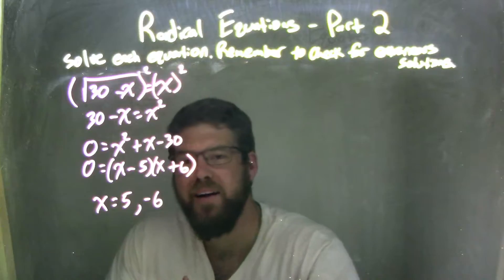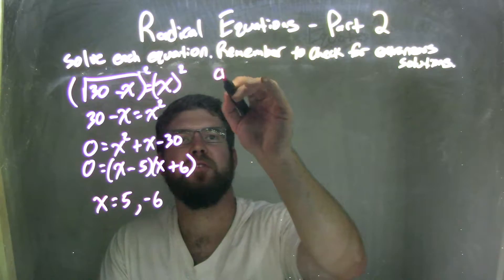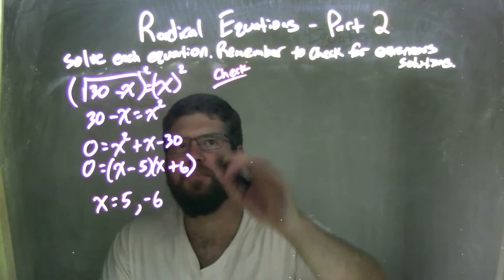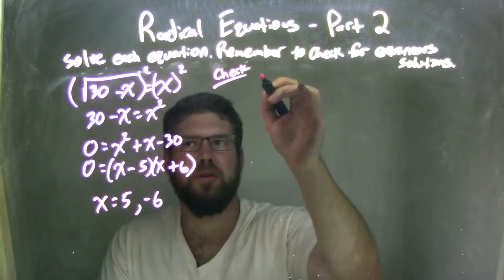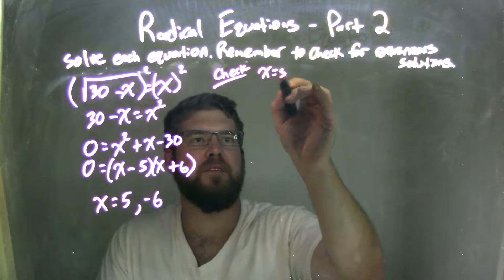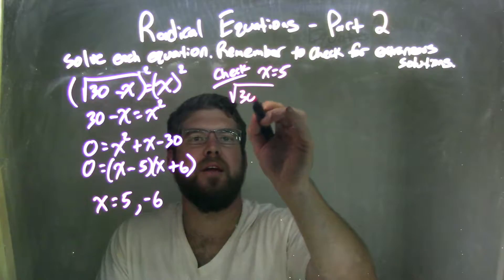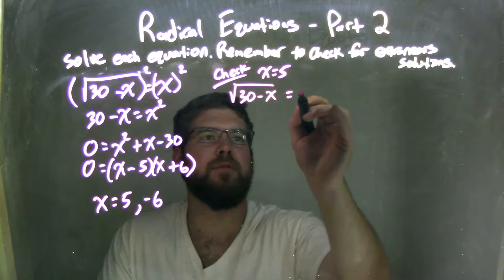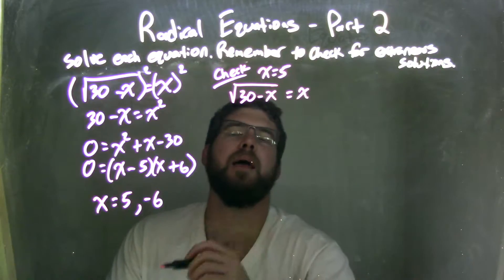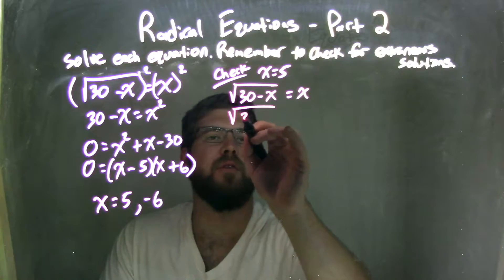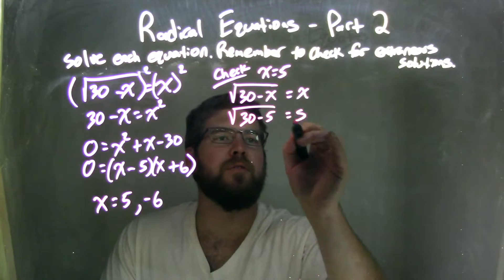So from there, I need to check for my extraneous solutions. Let's check it. So we need to plug it back into our original equation. So the first one, x equals 5. So I take my equation, 30 minus x equals x with the square root there, and I'll plug 5 in. So 30 minus 5 equals 5.